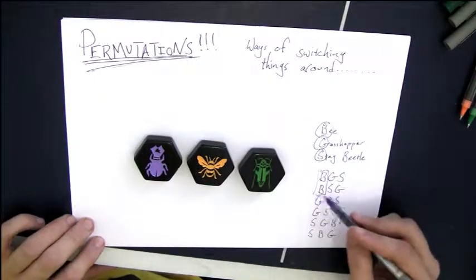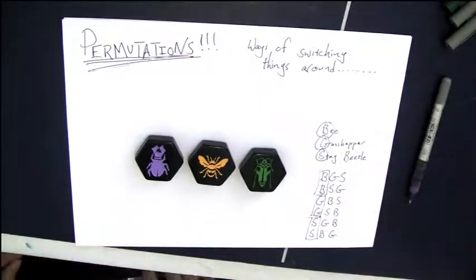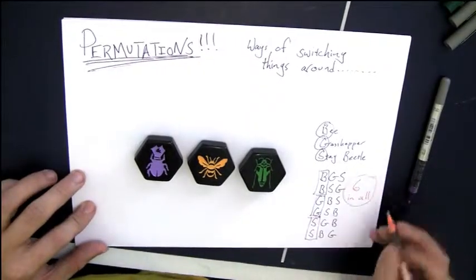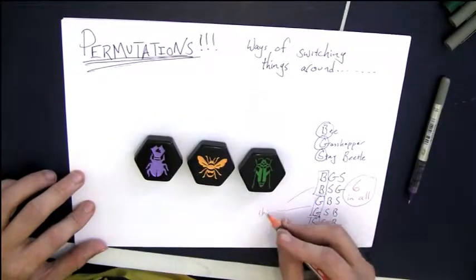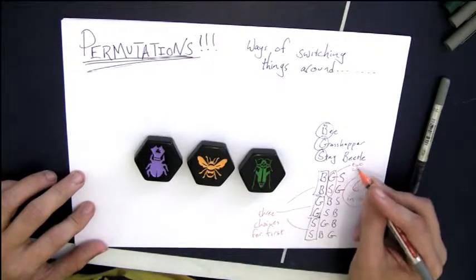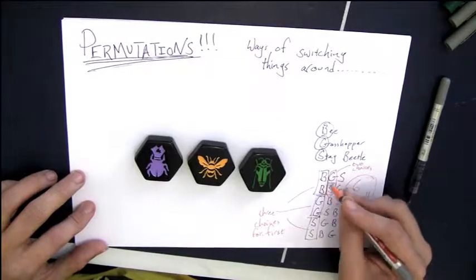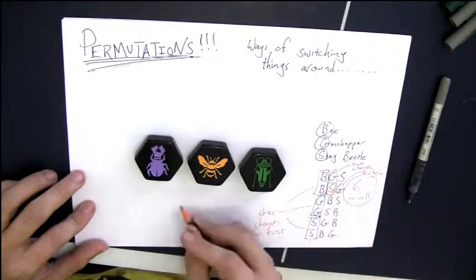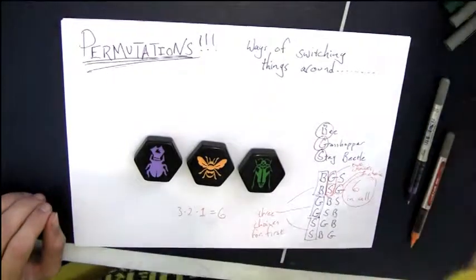So there's six different ways of switching them around. Three of them with B as the first letter, three with G, three with S. And we had three choices for that first one, and then if we chose the first one, there were two choices for the second one, and then there was only one choice for the last one. Three times two times one is equal to six.